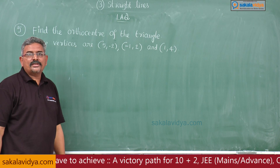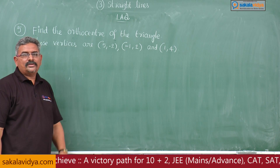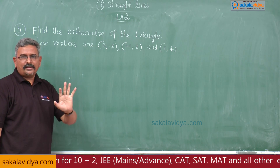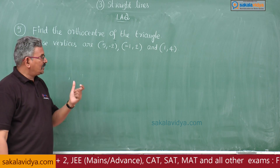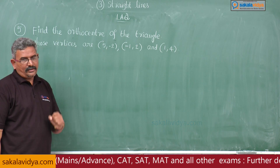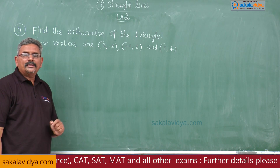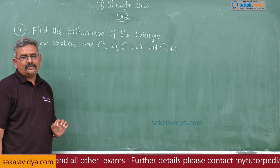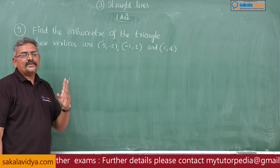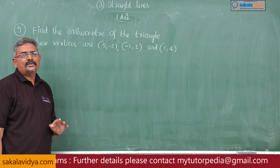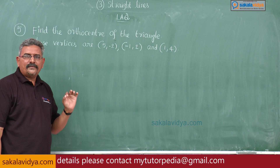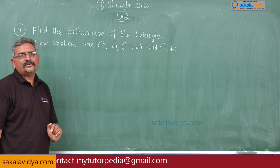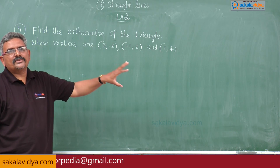How to find the orthocenter of a triangle when the three vertices are given: first, we have to find out the equations of any two altitudes of the triangle. If we solve those two equations, we get the point of intersection. That point of concurrence of the altitudes is known as the orthocenter of the given triangle.